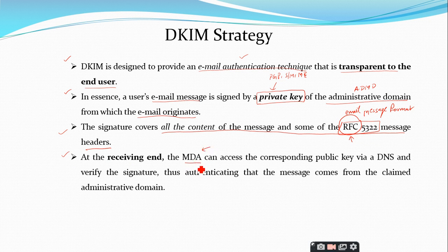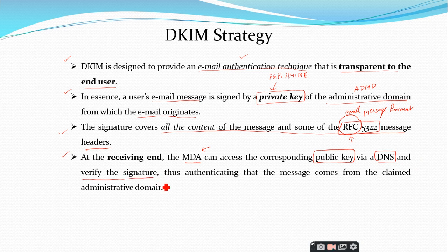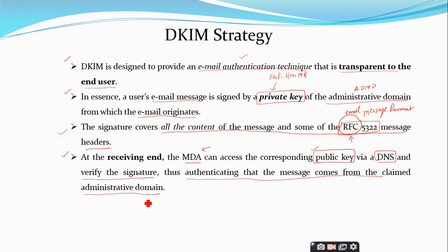Once the signature is verified with the public key and it is valid, you can say that the message received is authenticated — it comes from the claimed administrative domain. This is how DKIM works. Mail that originates from somewhere else but claims to come from a given domain will not pass the authentication test and will be rejected.